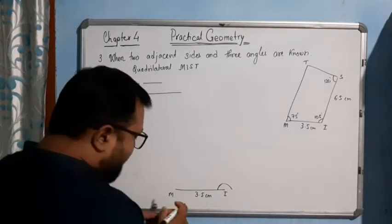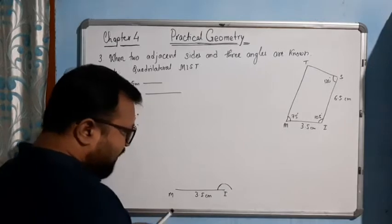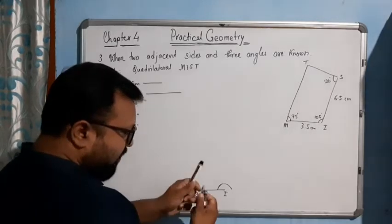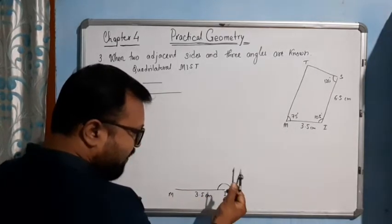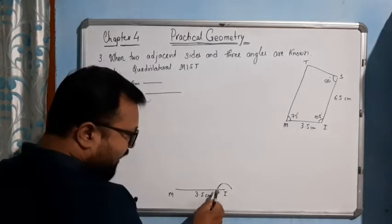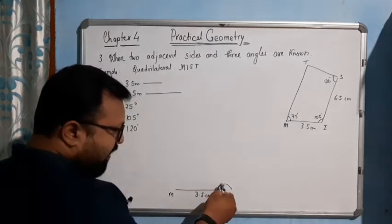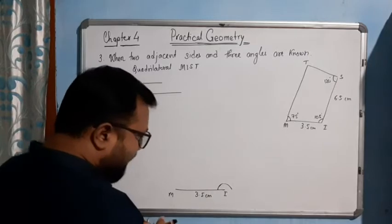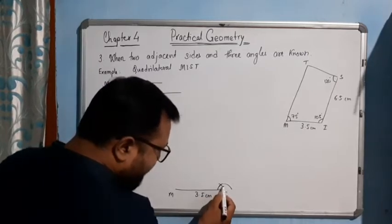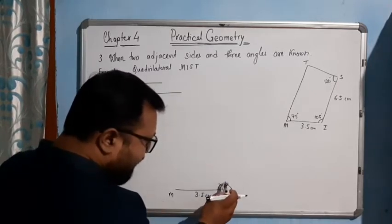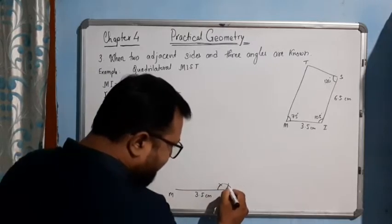Without changing this measurement, after drawing the arc, place the pin at this point and put another arc here, then again place the pin and put one more arc in this direction — somewhere here you will get the arc.